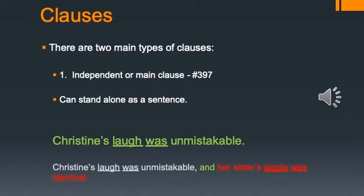For example: 'Christine's laugh was unmistakable.' That works just fine as a standalone sentence. You can also hook independent clauses together with coordinate conjunctions — for example: 'Christine's laugh was unmistakable, and her sister's giggle was identical.' Those are two independent clauses joined together in one sentence.